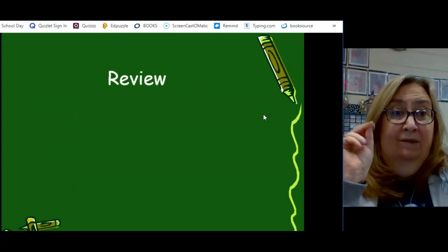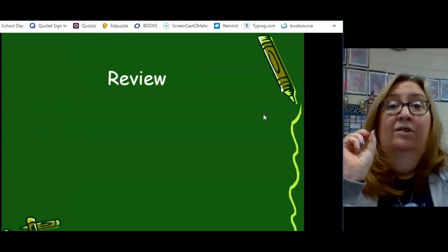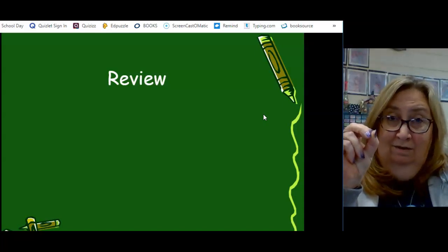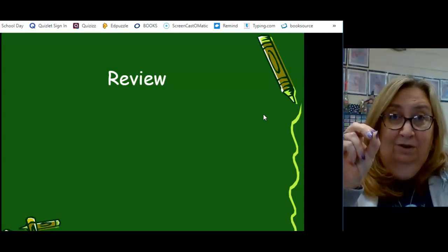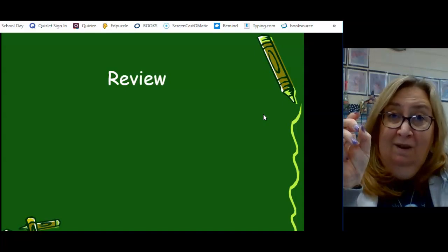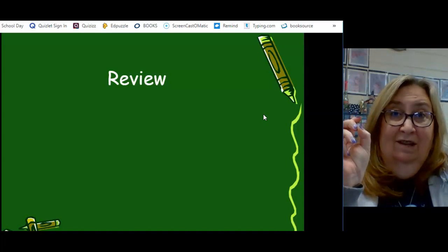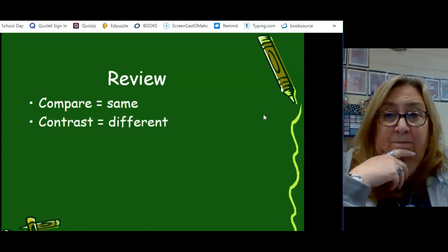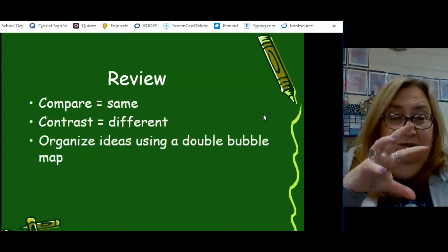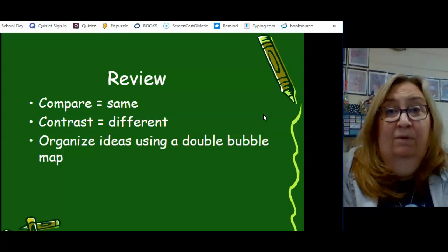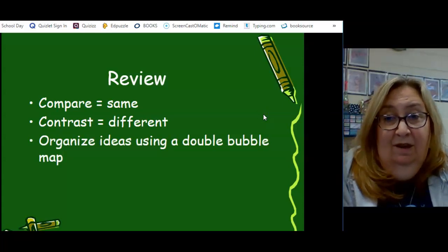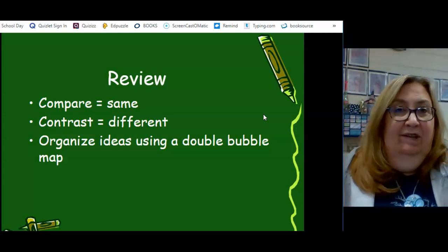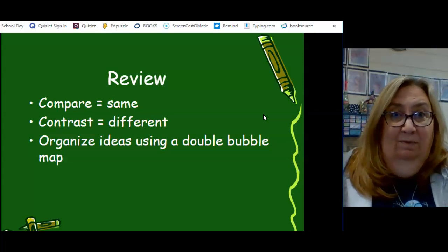So, let's review. This is the most important part. To compare means I'm looking for things that are similar or the same. To contrast, I'm looking for things that are different. And we can organize those ideas using a double bubble, or we can call that a Venn diagram. I want to show you two very short little videos that are going to help you understand compare and contrast a little bit more.